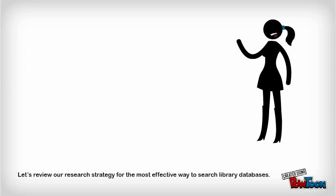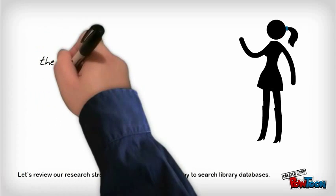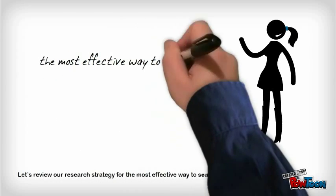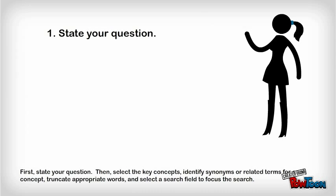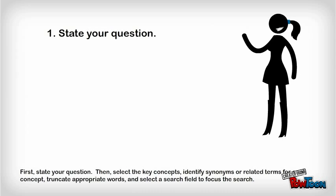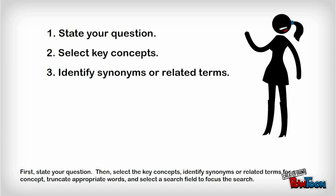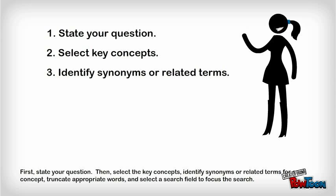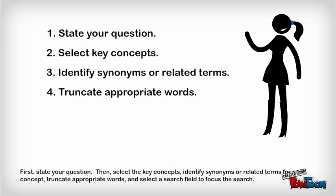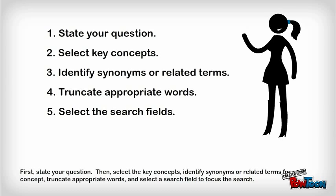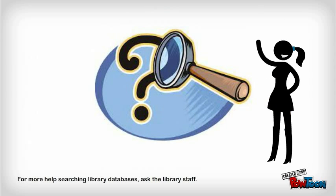Let's review our research strategy for the most effective way to search library databases. First, state your question. Then, select the key concepts, identify synonyms or related terms for each concept, truncate appropriate words, and select a search field to focus the search. For more help searching library databases, ask the library staff.